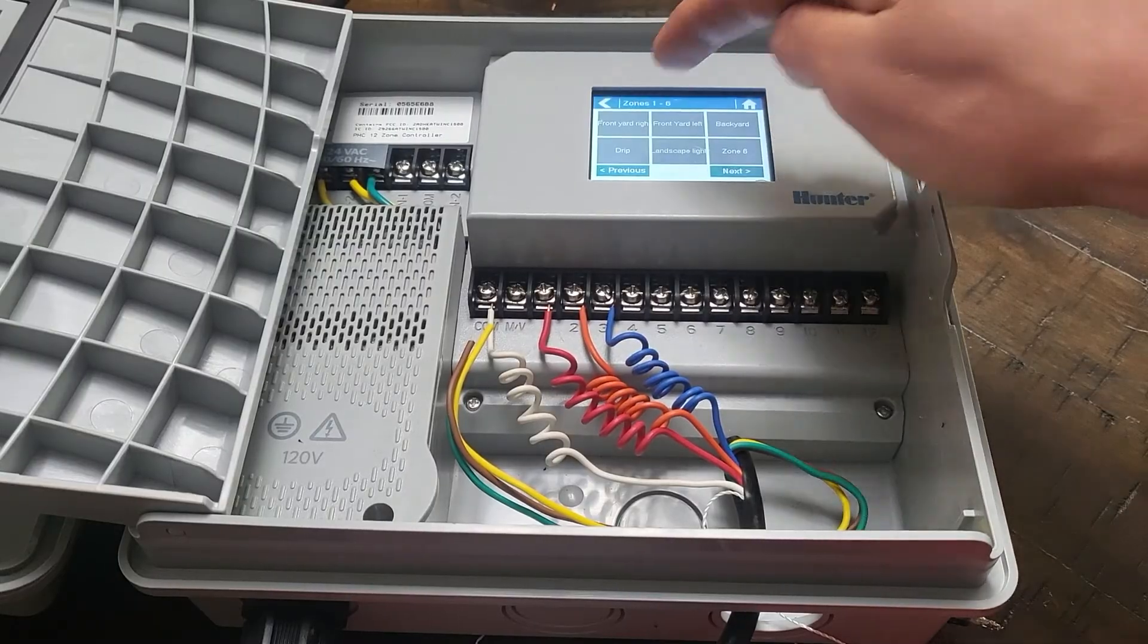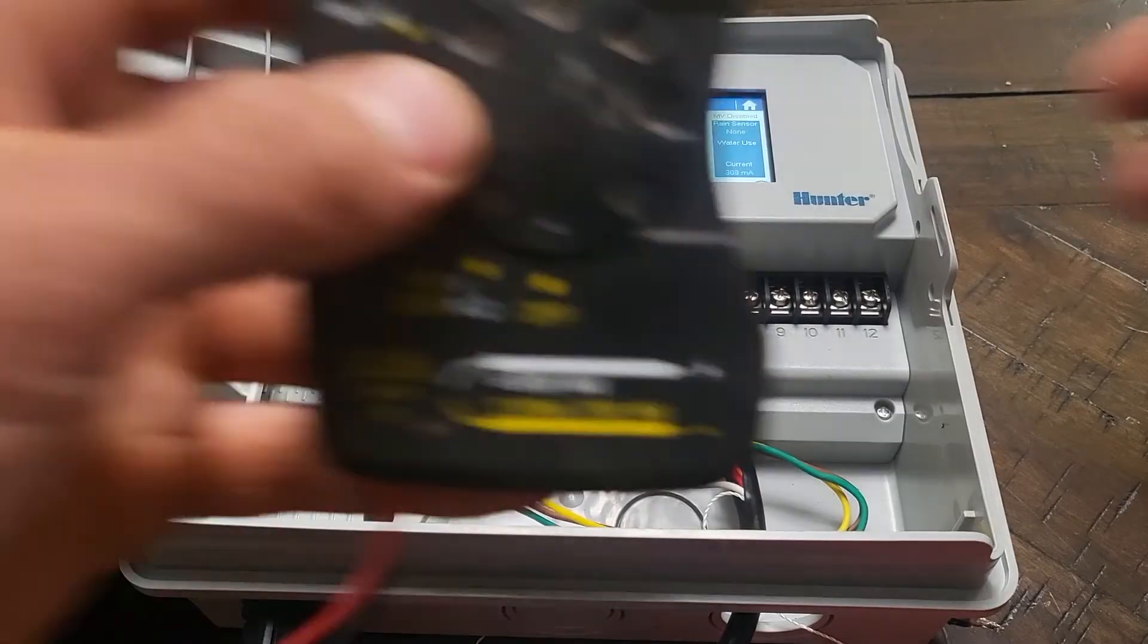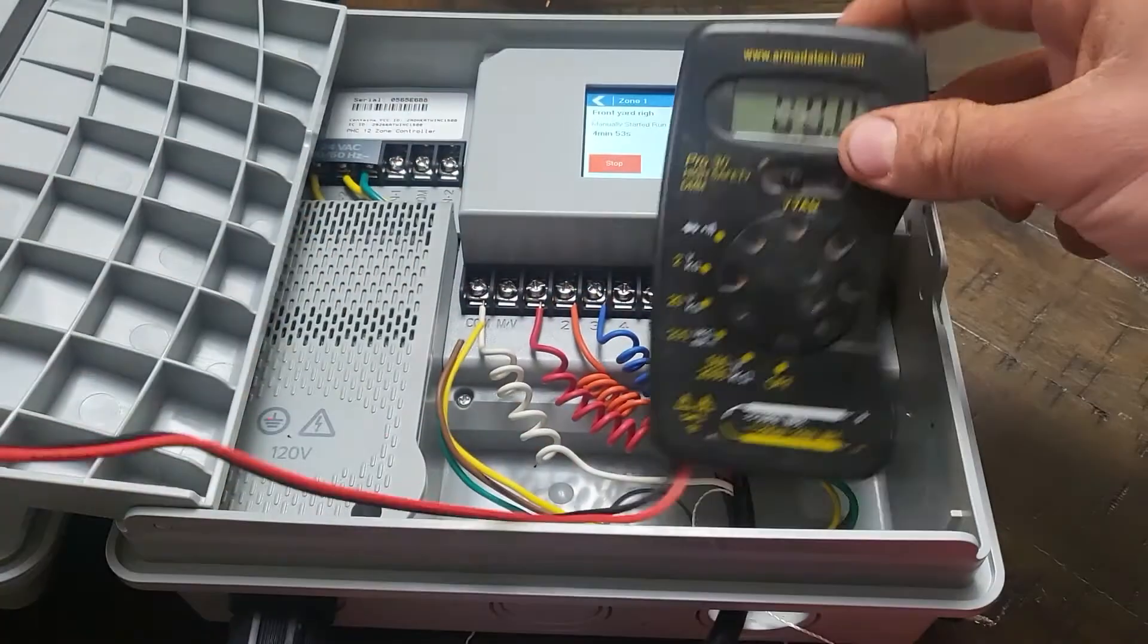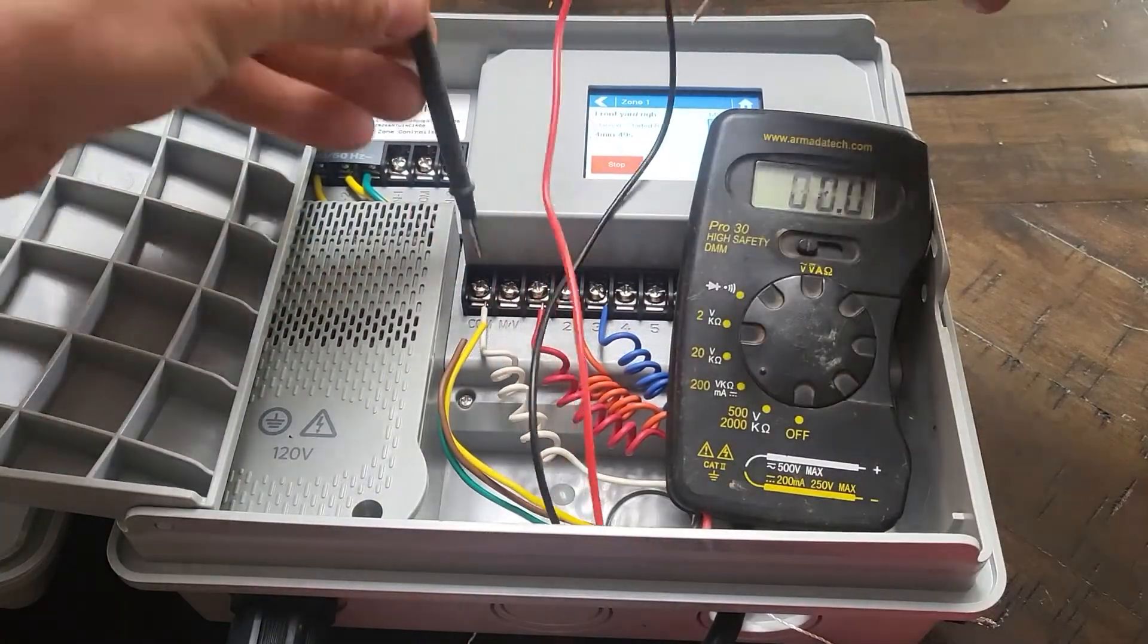When you turn a zone on at the controller, the controller sends 24 volts of electricity down the common and the field wire.